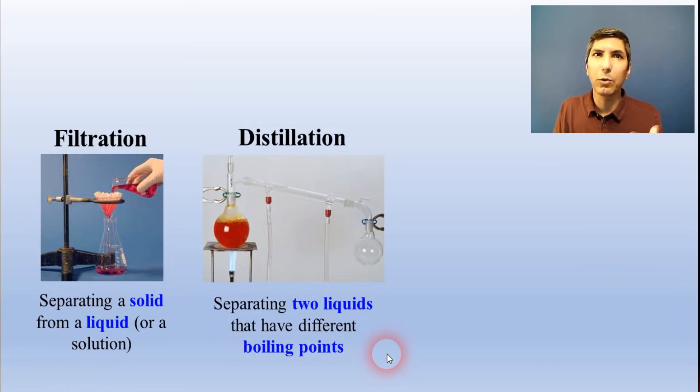Distillation is used to separate liquids that have distinctly different boiling points. So, if you have a mixture of alcohol and water, you could separate those using distillation, since alcohol boils around 78 degrees Celsius and water boils around 100 degrees Celsius.